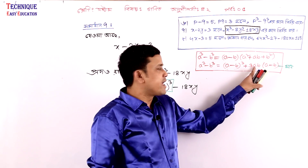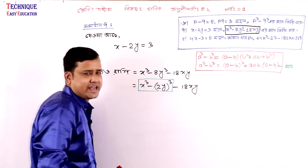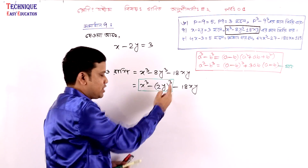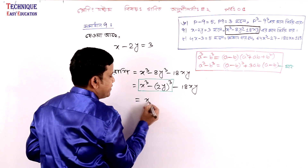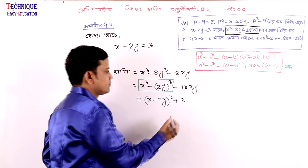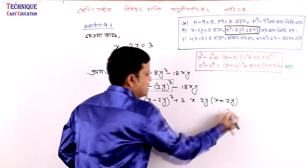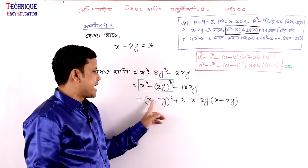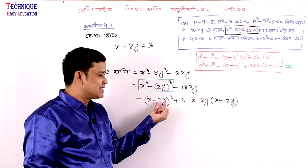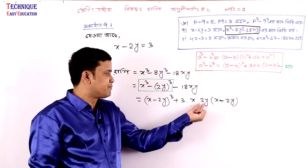Now substituting: a equals x and b equals 2y. Wherever a appears substitute x, wherever b appears substitute 2y. So a cube minus b cube equals a minus b whole cube plus 3ab into a minus b. With a equal to x and b equal to 2y, we get a cube minus b cube equals a minus b whole cube plus 3ab into a minus b.